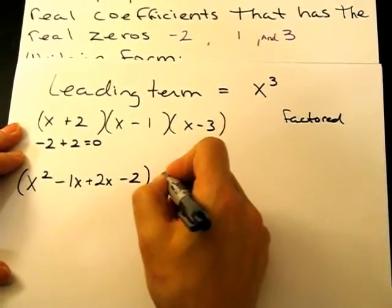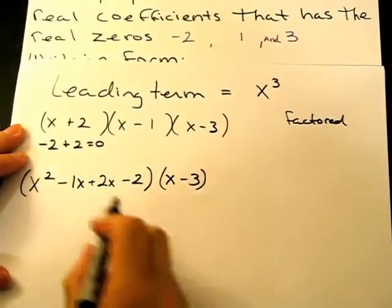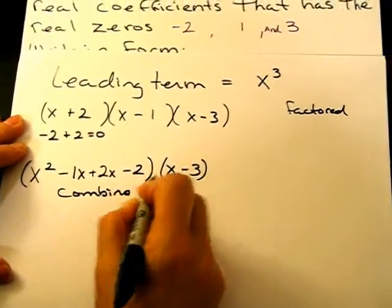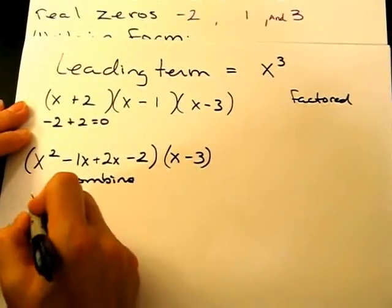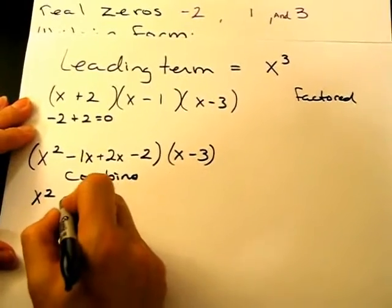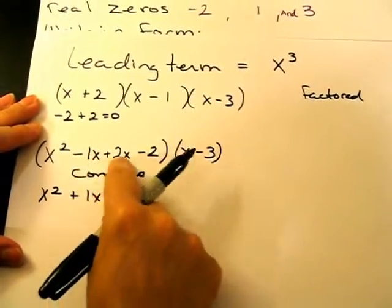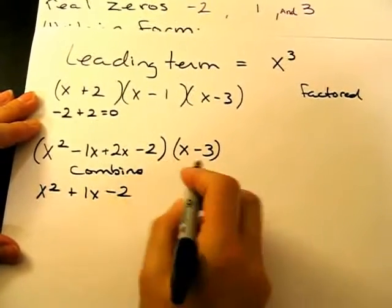I'm going to bring those down here just so I can keep them all together. Now I'm going to combine. These two terms are like terms, so I'll combine those to become x squared plus 1x. It's negative 1x plus 2x becomes a 1x minus 2.